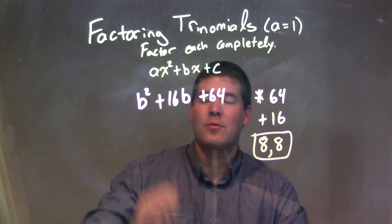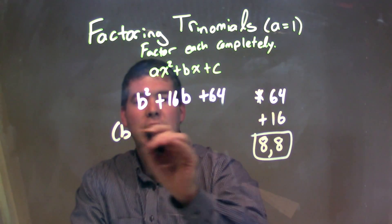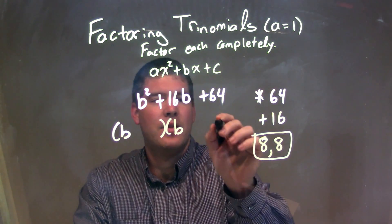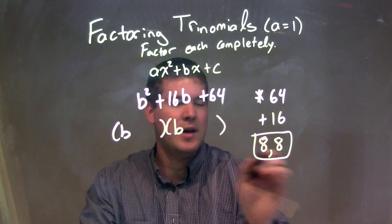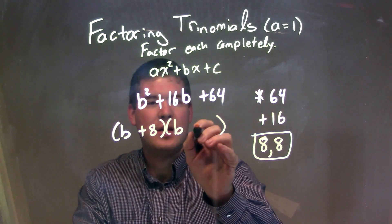So when I write this out, I can factor this out. I have b, and then b. Our two numbers are 8 and 8, so b plus 8, times b plus 8.